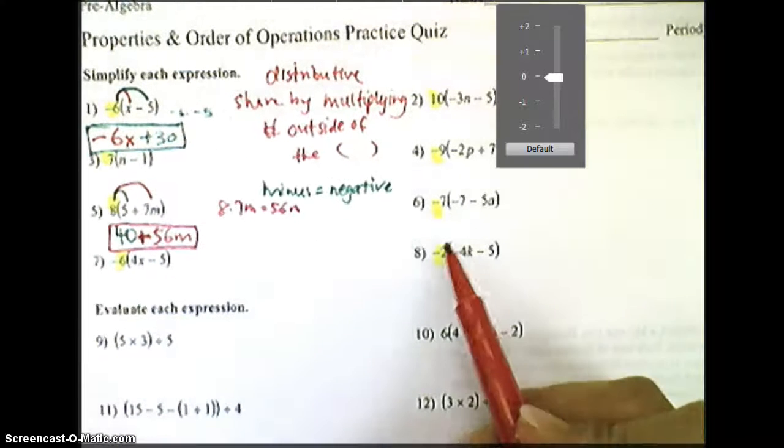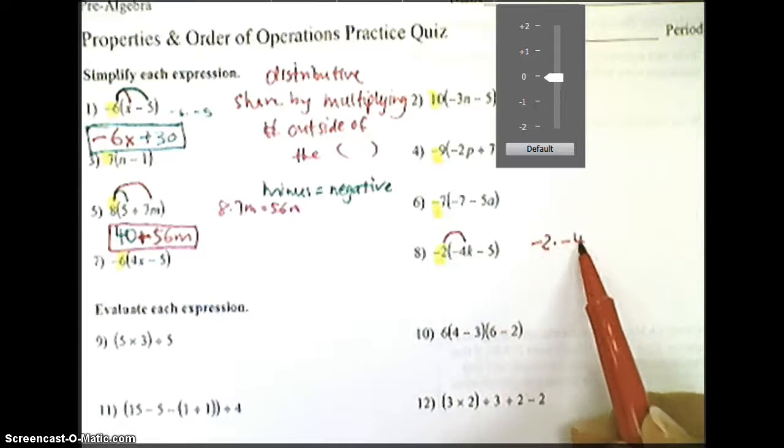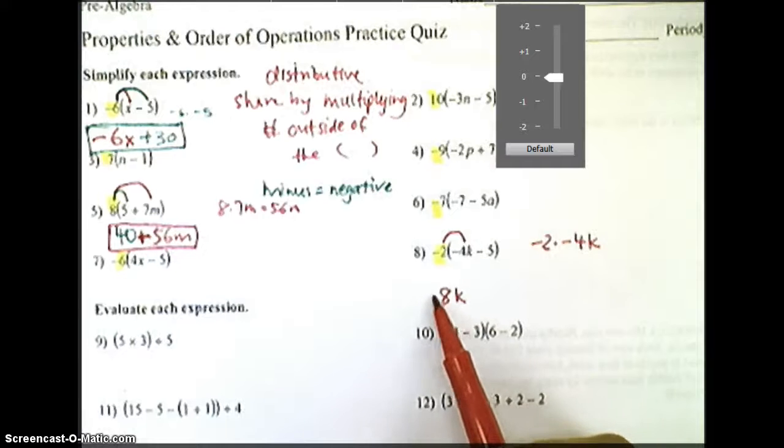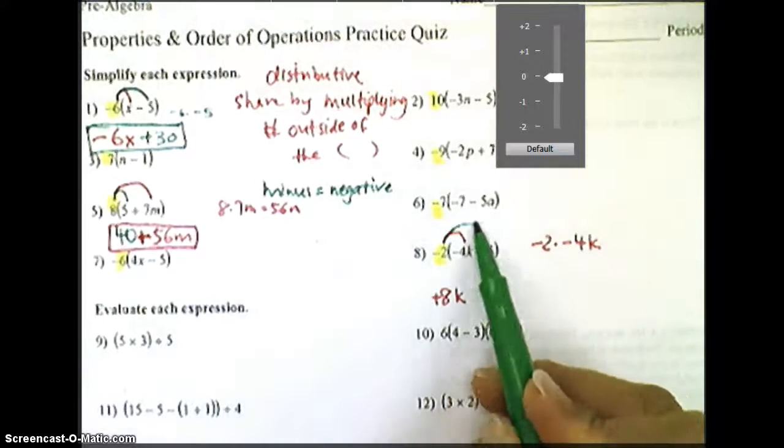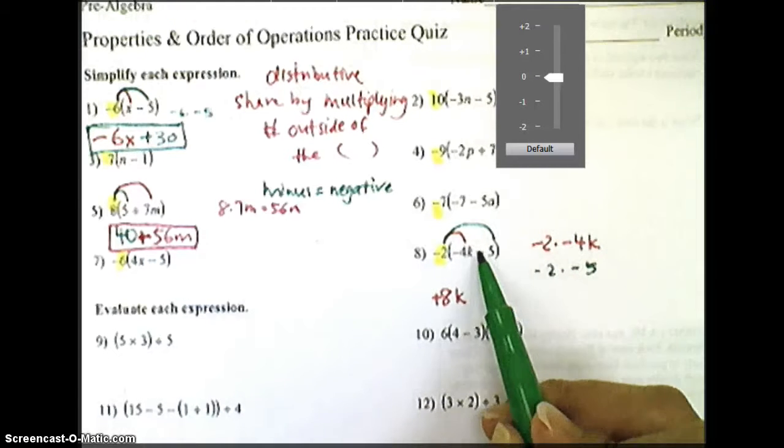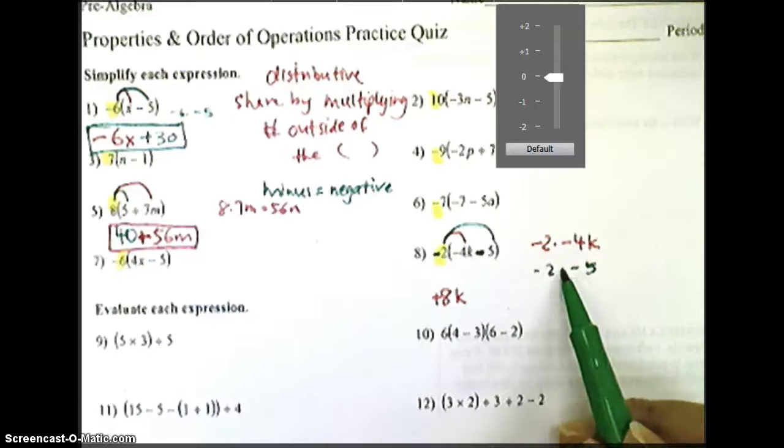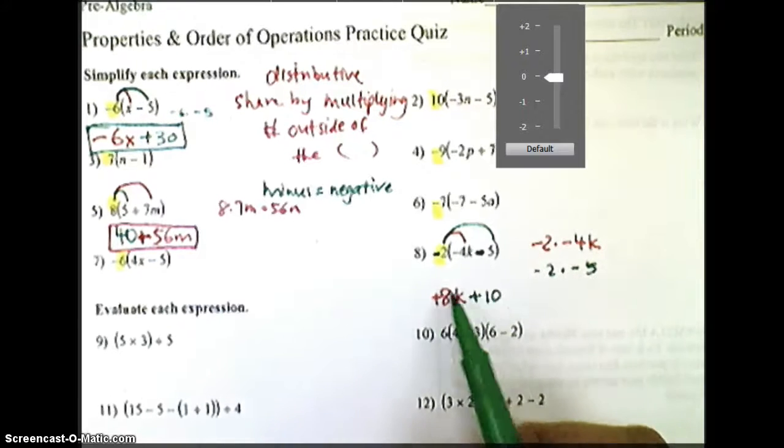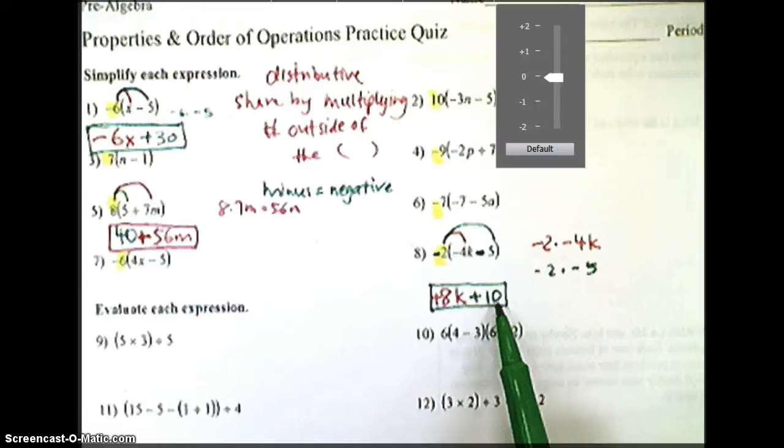Let's try number 8. We're going to distribute the negative 2 with the negative 4k. So we're going to multiply negative 2 times negative 4k. That will give me positive 8k. Then I'm going to do the second rainbow arrow, which is negative 2 times negative 5. Remember that minus is going to attach with the 5 as a negative 5. And there's a negative 2 there as well. So as I multiply negative 2 and negative 5, that's going to give me positive 10. And I'm going to box that answer because I cannot add 8k with 10 that doesn't have a k.